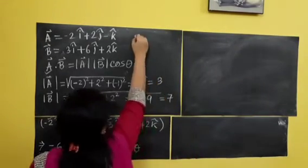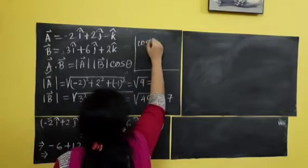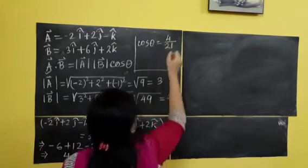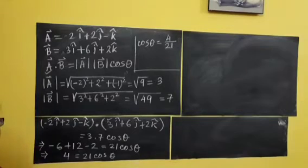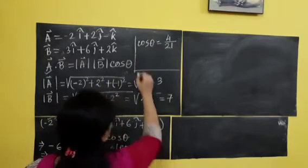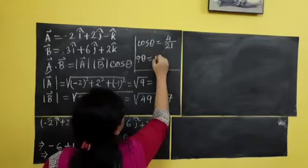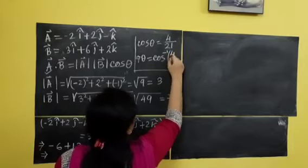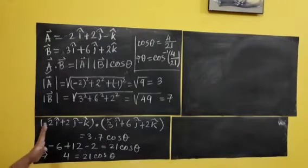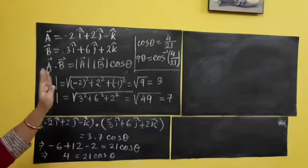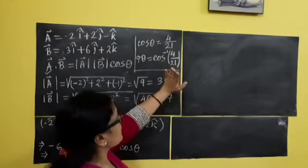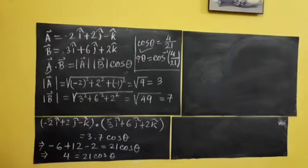So cos theta will be — I am doing here — cos theta equal to 4 by 21. Whenever you apply the formula, you will get the inverse. Means cos theta equal to 4 by 21. So what is the value of theta? Theta will be cos inverse 4 by 21. So, cos inverse 4 by 21 — this is the angle between the two vectors.